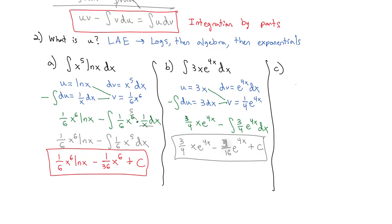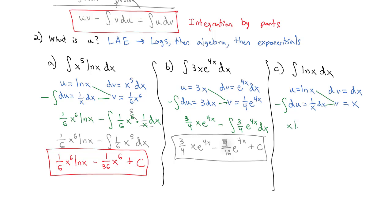One more example using integration by parts: the antiderivative of natural log of x dx. We don't know anything off the top of our heads whose derivative is natural log of x, so we need integration by parts. Let u equal natural log of x, and dv equal dx. Then du equals one over x dx, and v equals x. Applying u times v minus the integral of v du gives x natural log of x minus the integral of one over x times x, which is just one dx.